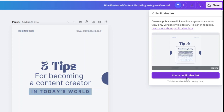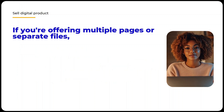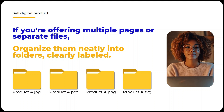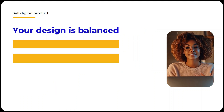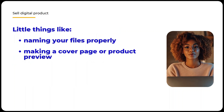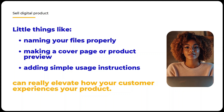Before you deliver or sell your product, make sure your product presentation is polished and professional. This includes how everything is arranged and packaged. If you're offering multiple pages or separate files, consider organizing them neatly into folders, clearly labeled and easy for your customer to understand. Think about the way you present your product just like branding — it's part of what makes your digital product feel high quality. Ensure that your fonts are readable, your design is balanced, colors are consistent, and nothing looks cluttered. Little things like naming your files properly, making a cover page or product preview, or adding simple usage instructions can really elevate how your customer experiences your product.